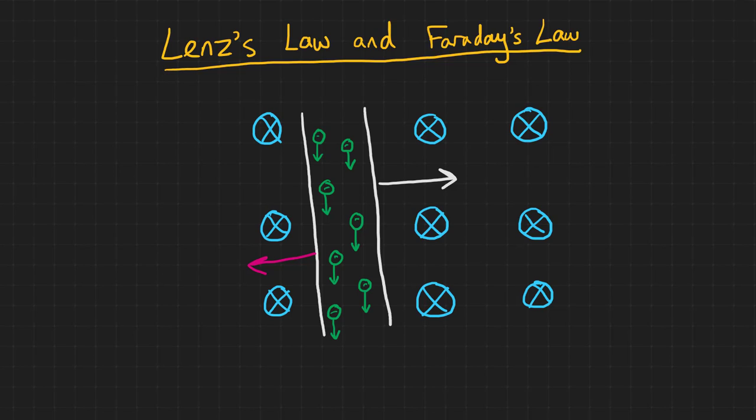This principle is known as Lenz's Law. In full, Lenz's Law says, The direction of induced current is always such as to oppose the change that causes the current. In other words, whatever we do to induce a current, that current will always create a force to oppose our action.